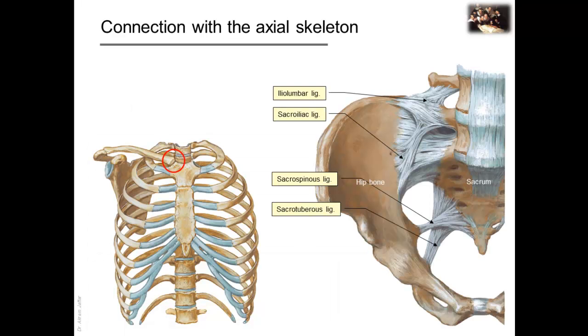Since the lower limb is weight-bearing, then unlike in the upper limb, the lower limb is directly attached to the axial skeleton by a sacroiliac joint and by strong ligaments, which link the sacrum to the hip bone. The hip bone is formed of three bones, namely the ilium, ischium, and pubis.